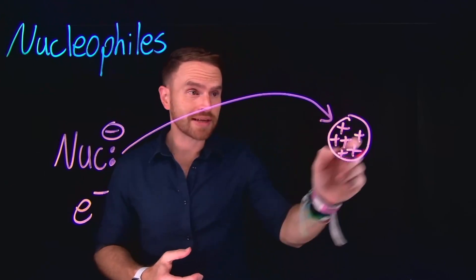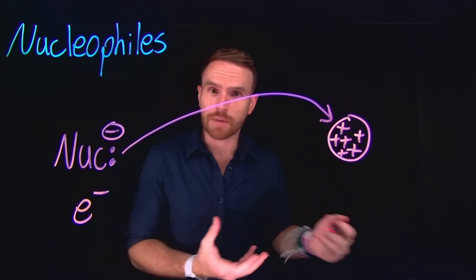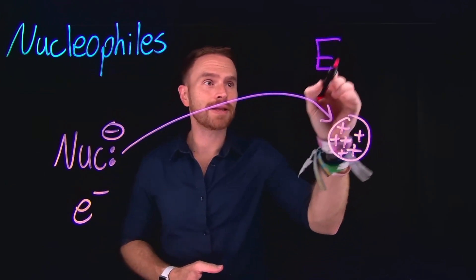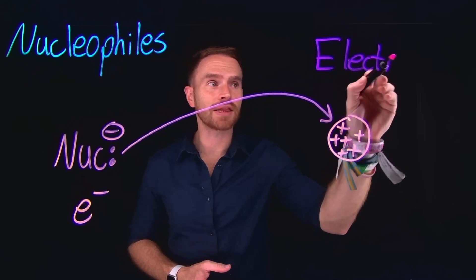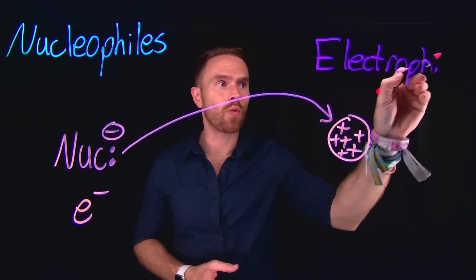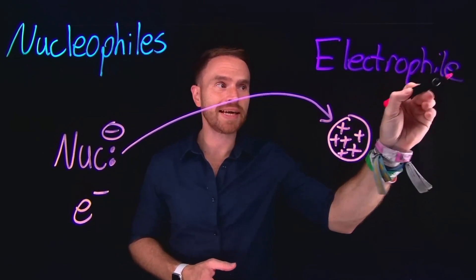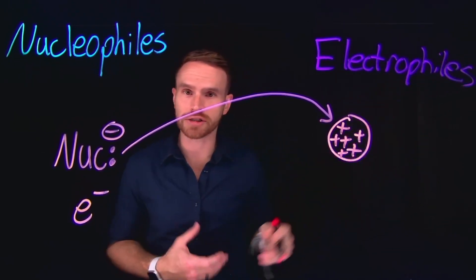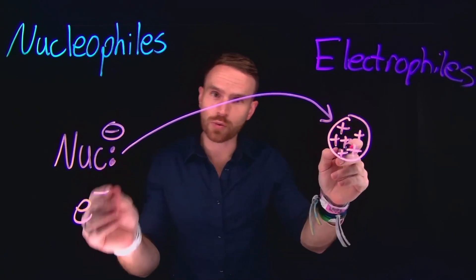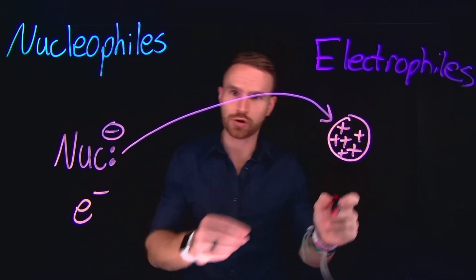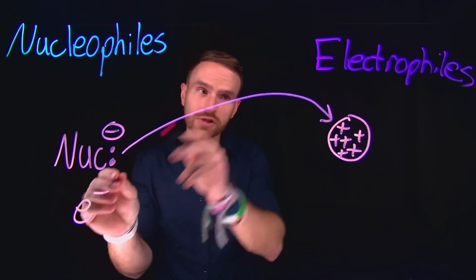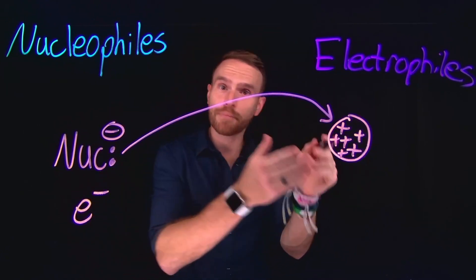Conversely, things that have a buildup of positive charge we can call an electrophile, because it is a lover of electrons. It wants to receive electrons from other species. So the electrophile is going to receive electrons, and the nucleophile is going to attack protons.